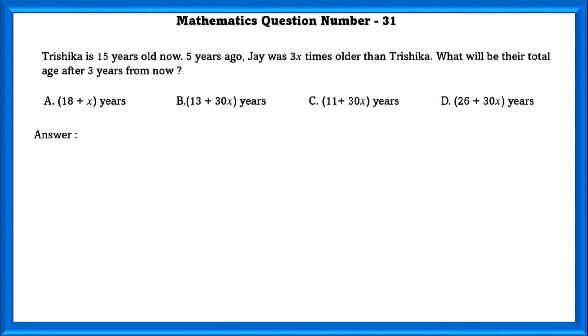Class 6 IMO Level 2. Mathematics question number 31. Trishika is 15 years old now. 5 years ago Jay was 3x times older than Trishika. What will be their total age after 3 years from now?